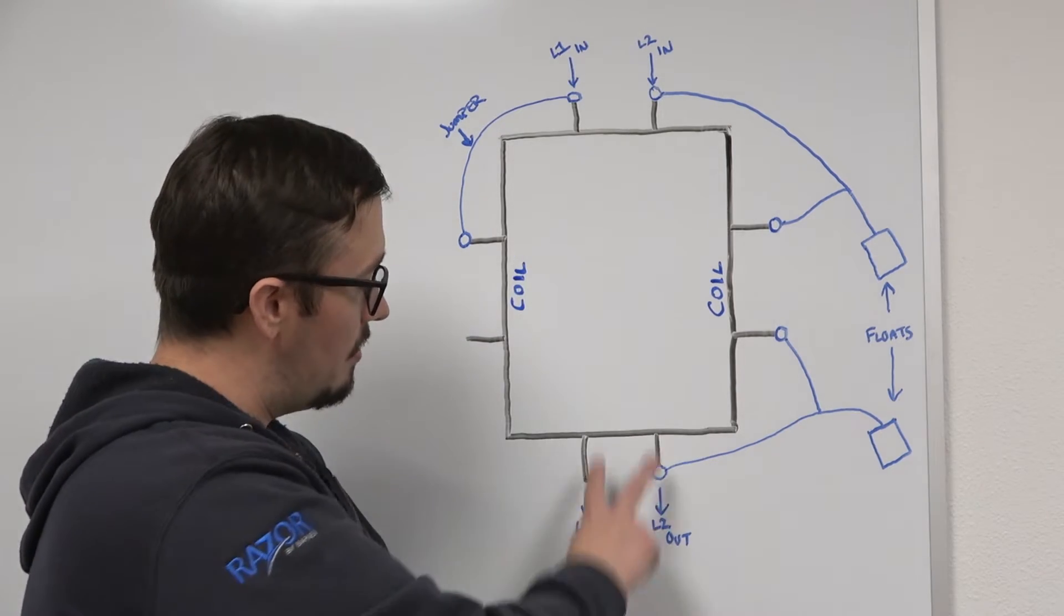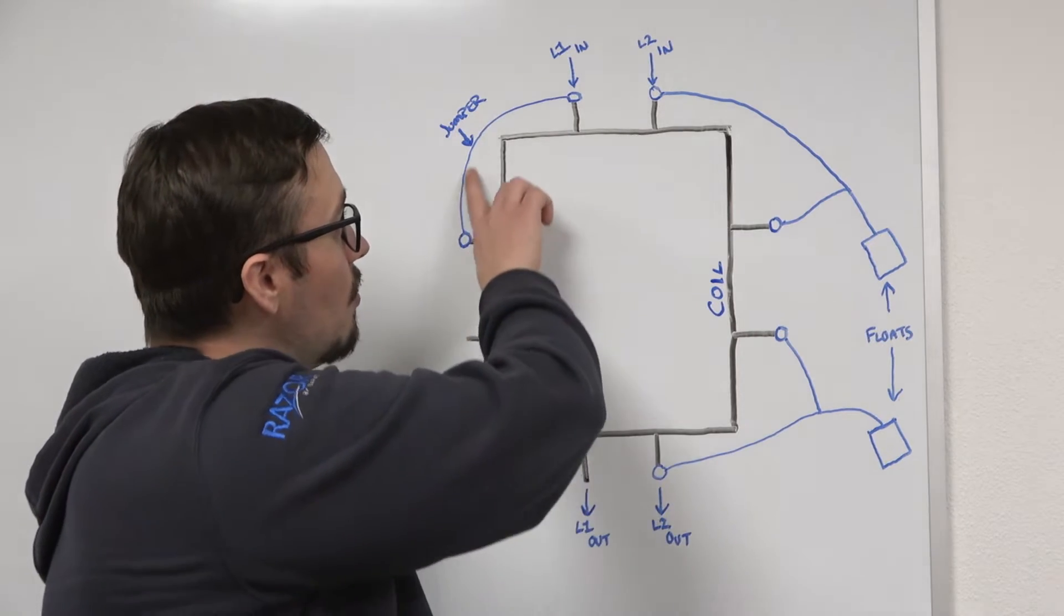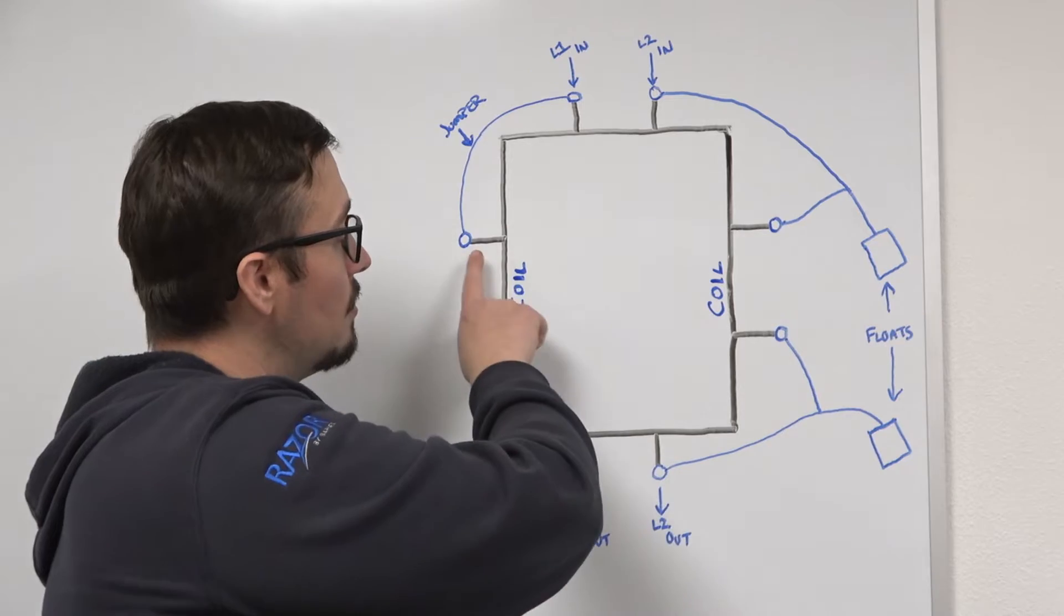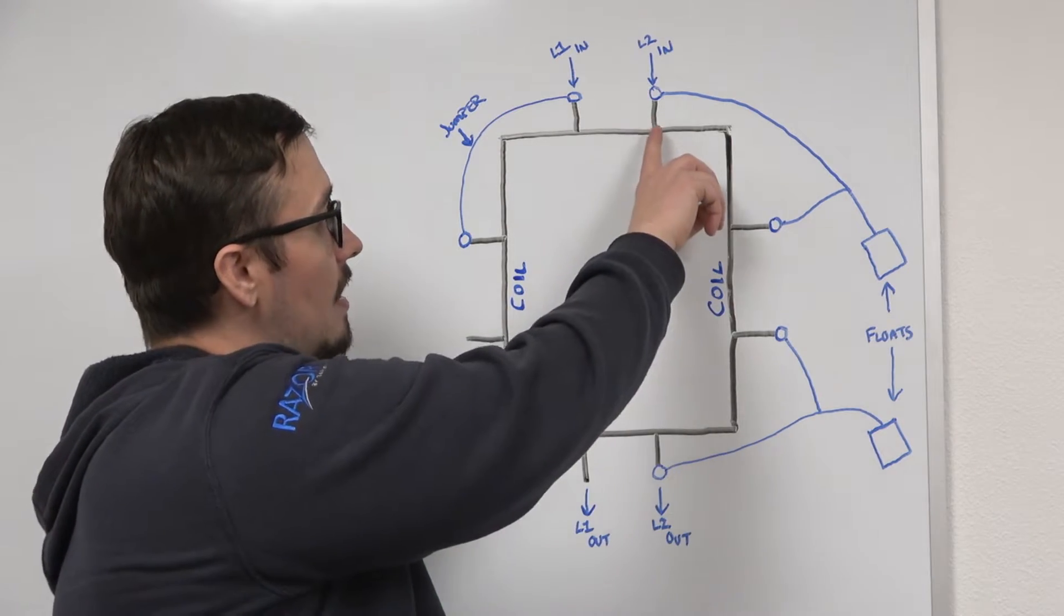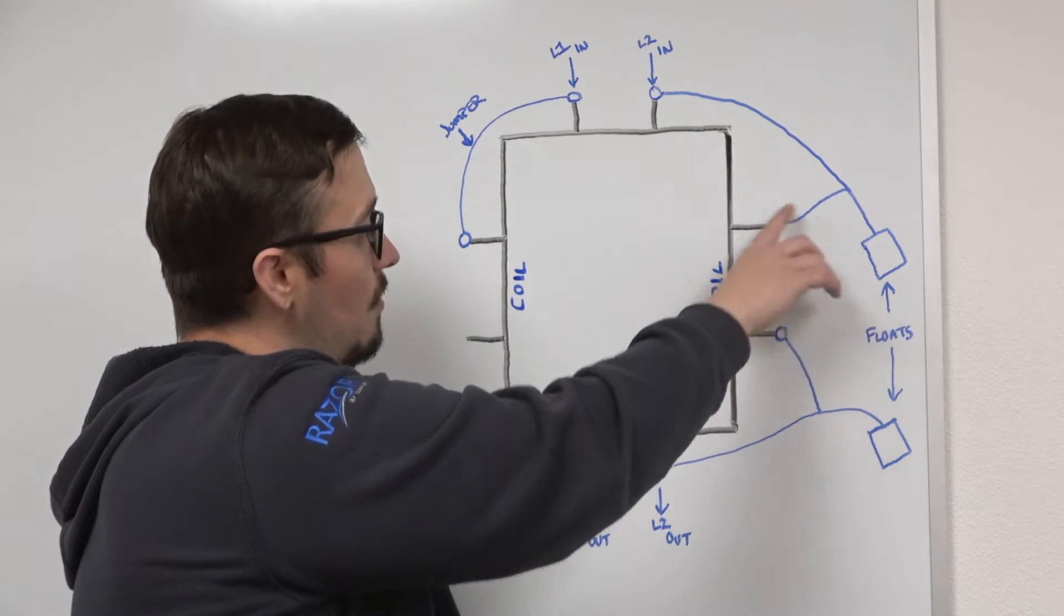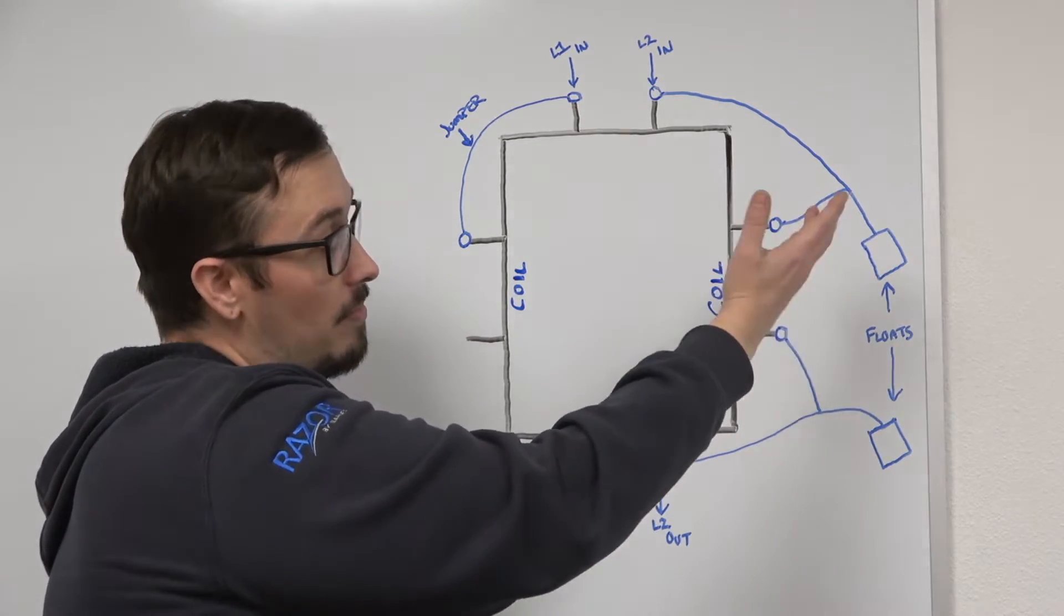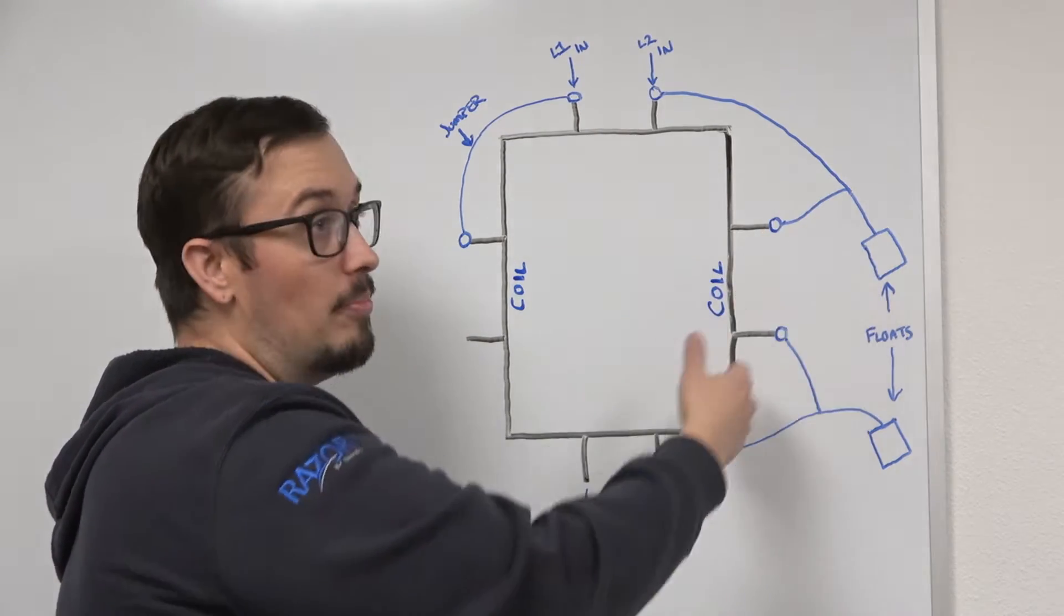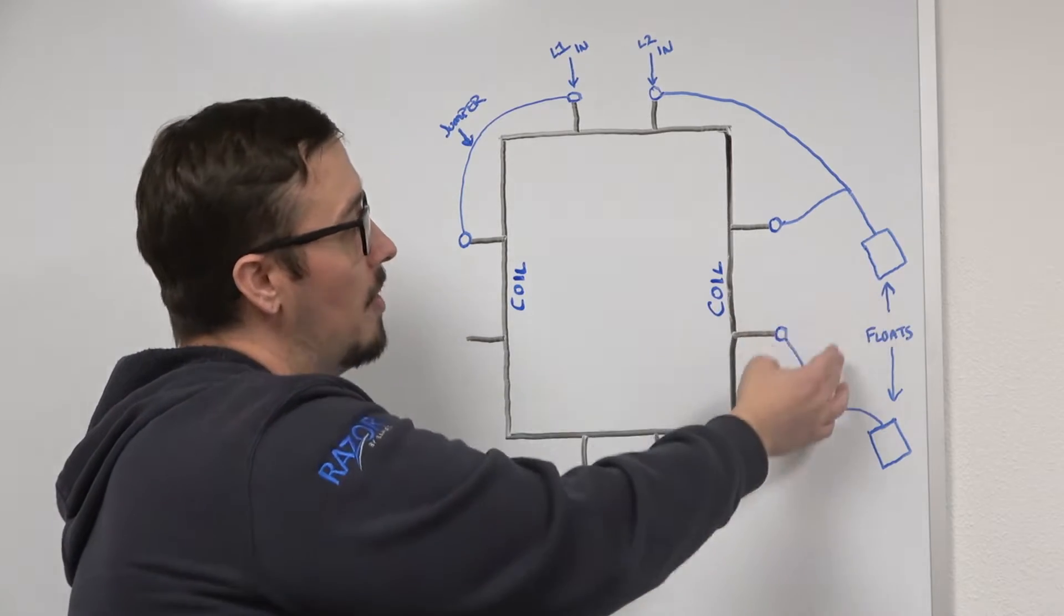Basically to break it down, you've got your incoming power, outgoing power, your coil on the left and right hand side. We're jumpering one side of the power to the coil to keep that powered at all times. The power starts by being jumpered through the float switch over to this side of the coil.